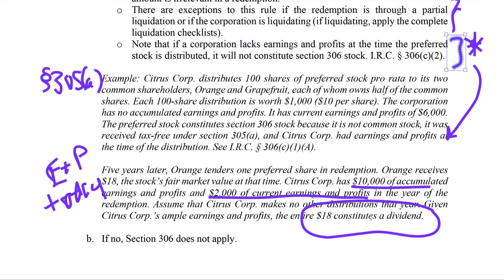If there are no sales or redemptions, there are no Section 306 issues — you can hold Section 306 stock indefinitely without triggering these rules. Section 306 is designed to prevent anti-abuse, just like Section 302 redemption rules, stopping people from converting what should be ordinary dividend income into lower-taxed capital gains. At the time of this video, qualified dividend rates still provide some rate differential, but that could change in the future. Go back over these problems and understand the concepts.